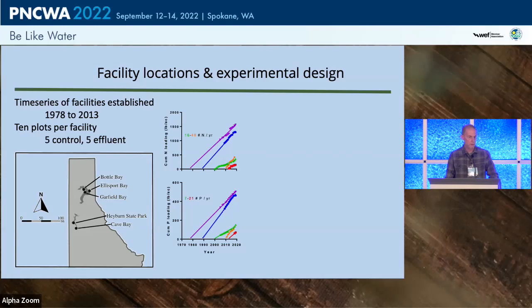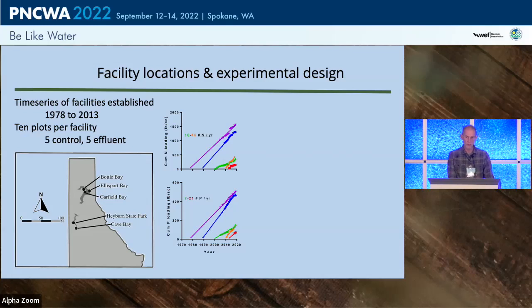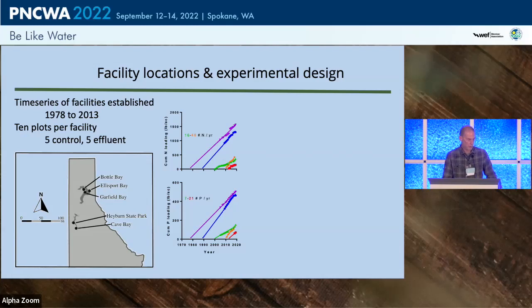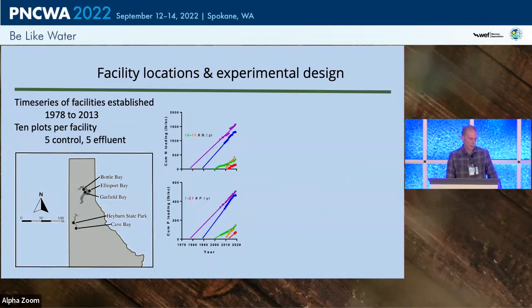We can look at the records from these facilities to determine cumulative loading rates, though records before 2000 had to be extrapolated back to facility initiation. These facilities are receiving between 16 and 46 pounds of nitrogen per year and 7 to 21 pounds of phosphorus per year.